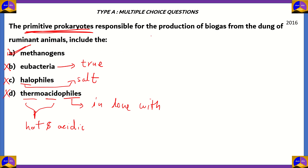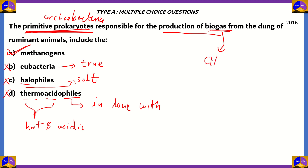You could also arrive at the answer easily by looking at the question itself. It says 'primitive prokaryotes', which means it has to be part of archaea, and that already limits your search to methanogens, halophiles, and thermoacidophiles. It also says 'responsible for production of biogas'. Biogas is mostly made of CH4, which is methane. Therefore, option A, methanogens, is the correct answer.